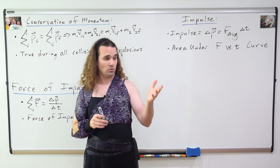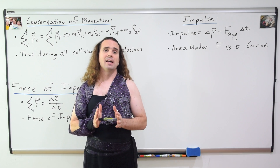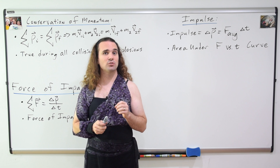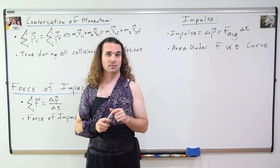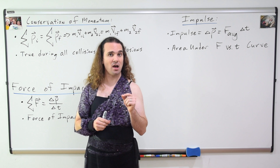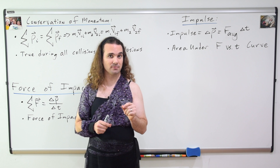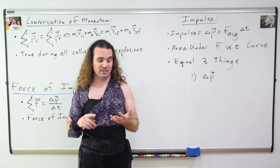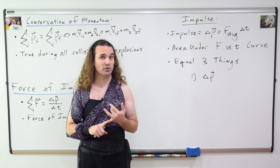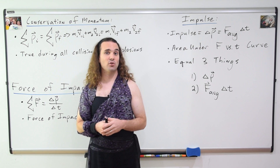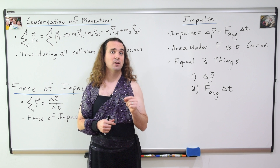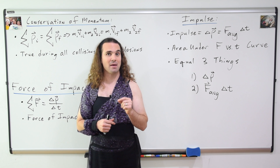Correct Billy. Now, it is important you realize that impulse is equal to three different things. First, impulse is equal to the change in momentum of an object during a collision. Impulse equals the average force of impact during the collision, multiplied by the change in time during the collision. And if you have a force as a function of time graph, impulse is equal to the area between the curve and the time axis.